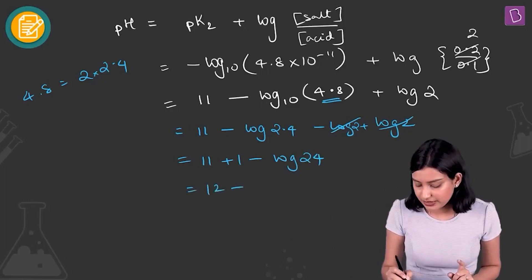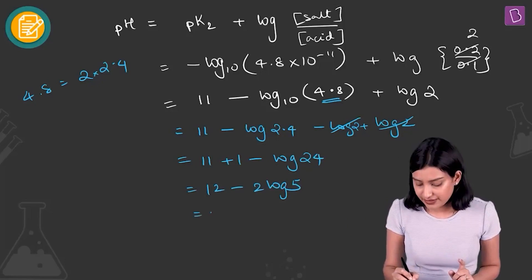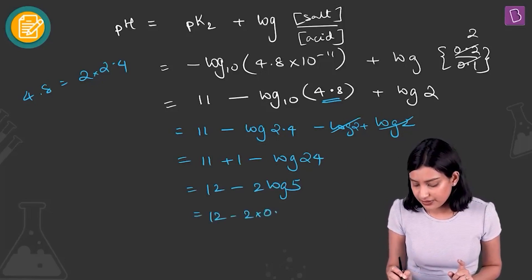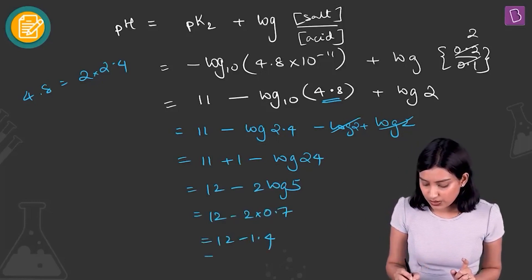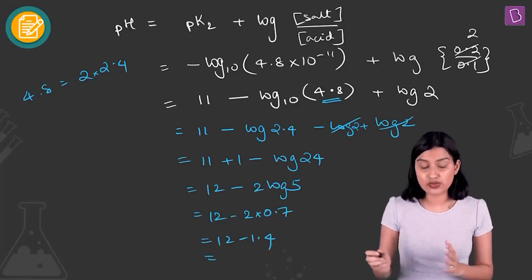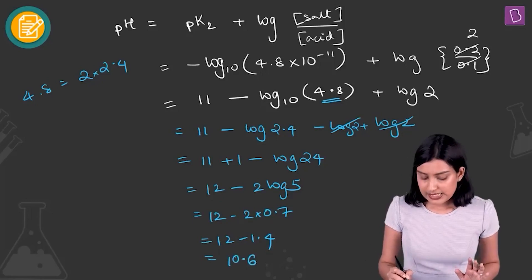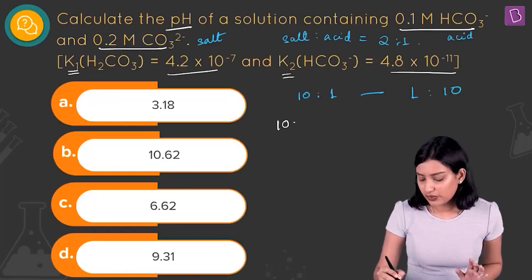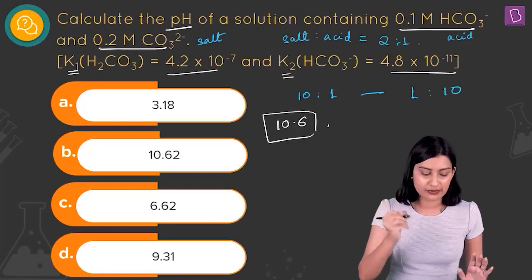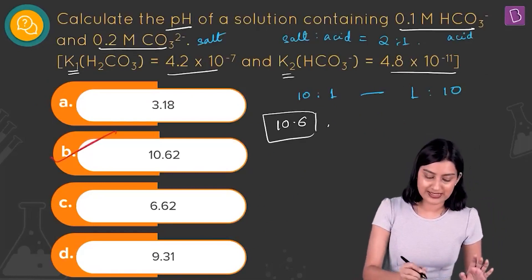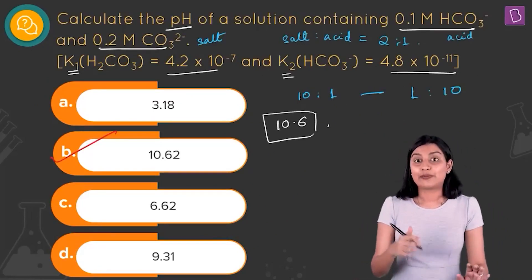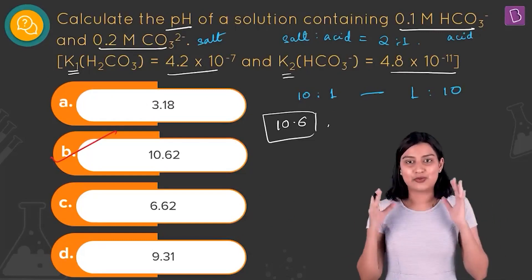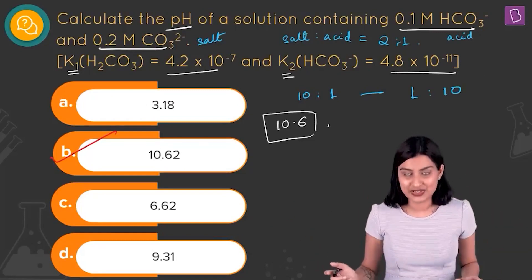Approximating 24 to 25, we write this as 12 minus 2 log 5. Log 5 is 0.7, so 12 minus 1.4 equals 10.6. The pH of the solution is 10.6, which matches option B giving 10.62, so option B is the right answer.